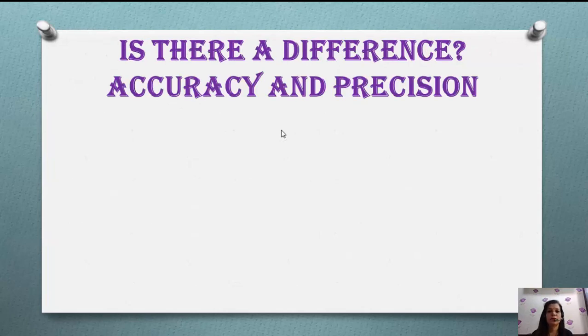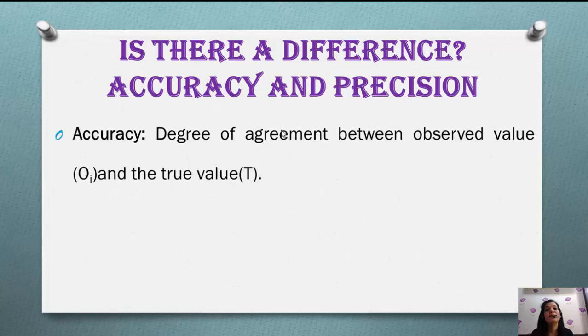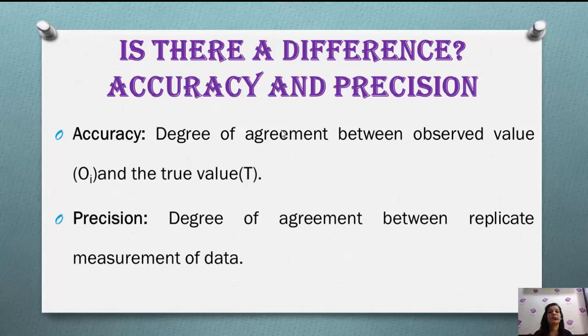Is there any difference between accuracy and precision? Yes. Accuracy is the degree of agreement between observed value and true value - how close your observations are towards the expected result. Precision is the degree of agreement between replicate measurements of data.